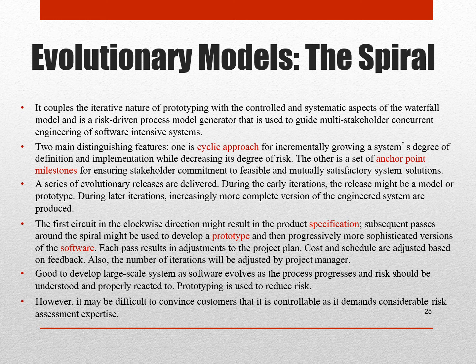A series of evolutionary releases are delivered during early iterations; the release might be a model or prototype. During later iterations, increasingly more complete versions of the engineered system are produced. The first circuit in the clockwise direction might result in the product specification. Subsequent passes around the spiral might develop a prototype and then progressively more sophisticated versions of the software. Each pass results in adjustments to the project plan, and cost and schedule are adjusted based on feedback. The number of iterations will also be adjusted by the project manager.